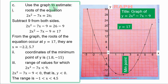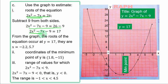Use the graph to estimate. Roman numeral 1: roots of the equation 2s² - 7s = 26. Note that the graph plotted is y = 2s² - 7s - 9. For you to use the graph to solve any other equation, that equation must be simplified to the one that is plotted. To achieve that, subtract 9 from both sides, giving 2s² - 7s - 9 = 17. Since everything on the left equals y, the solution occurs at y = 17.